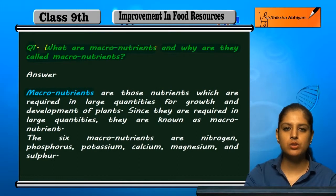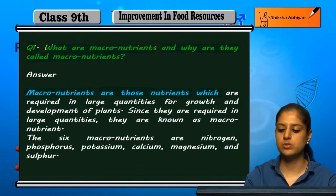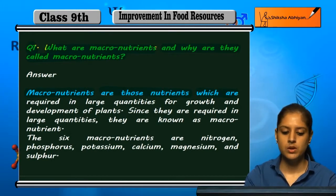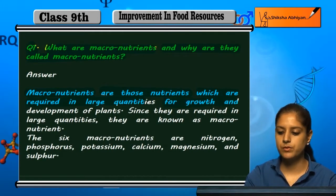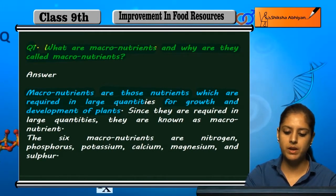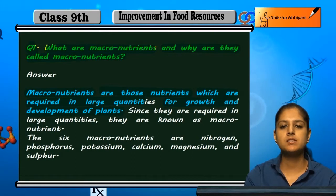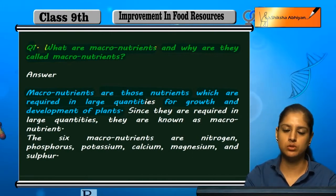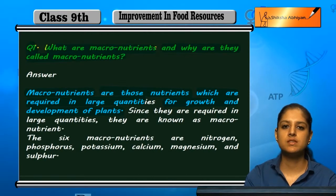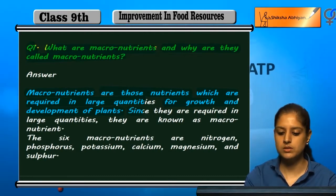So the macronutrients are those nutrients — woh nutrients hoti hain which are required in large quantities for the growth and development of plants. Plants ki growth aur development ke liye jo nutrients zyada quantity mein chahi hoti hain, unko macronutrients kaha jata hai.